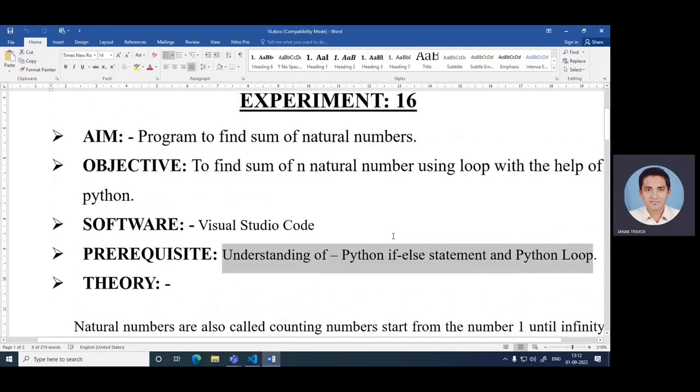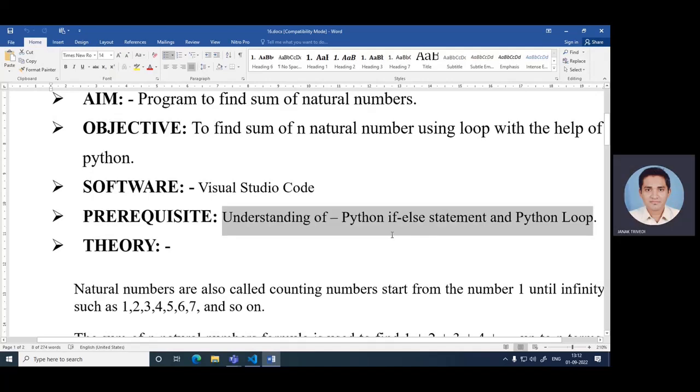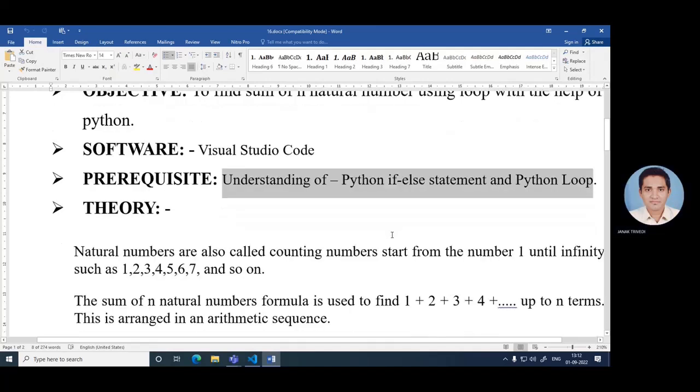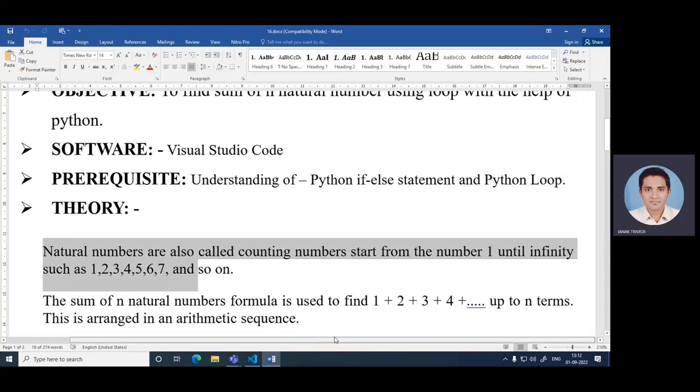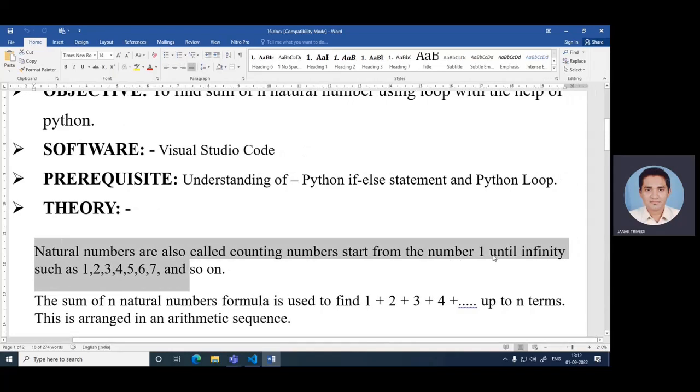First, let's understand some concepts about natural numbers. Natural numbers are also called counting numbers and start from the number 1 until infinity, such as 1, 2, 3, 4, 5, 6, 7 and so on.